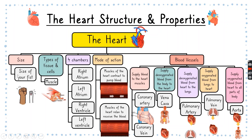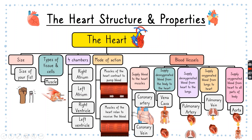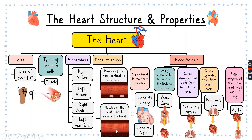The heart is about the size of your fist and it's made up of muscle tissues and has four chambers. The upper parts are called the atriums and the lower chambers are called the ventricles. These atriums and ventricles are these four parts, and their main function is to receive blood. The heart works by contracting and relaxing. During contraction, the size of the cells became shorter, and then it returns back to its original size — and that's relaxation.